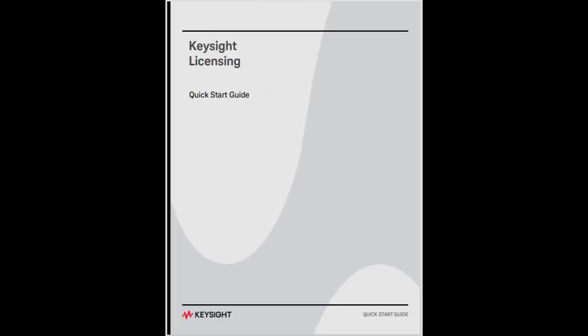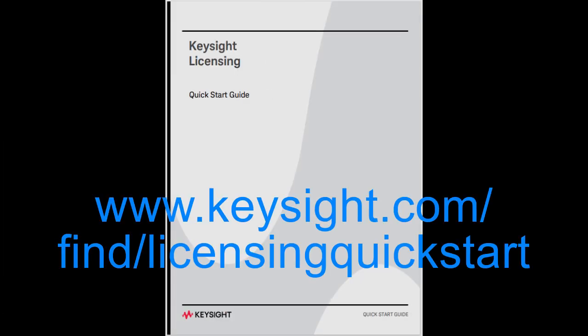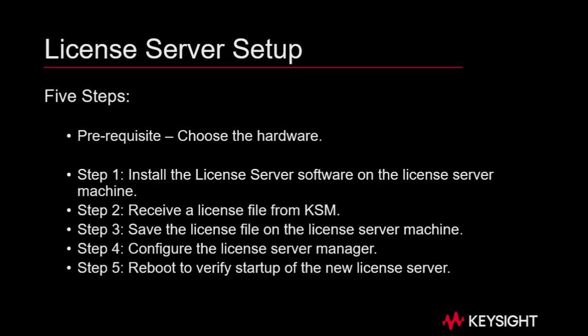Note that these instructions can also be found in the Keysight Licensing Quick Start Guide. Download that at keysight.com/find/licensingquickstart. Here's an overview of the steps to set up a license server — this video takes you through each of the five steps.